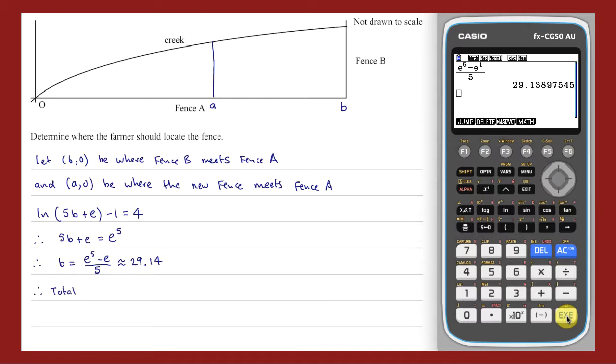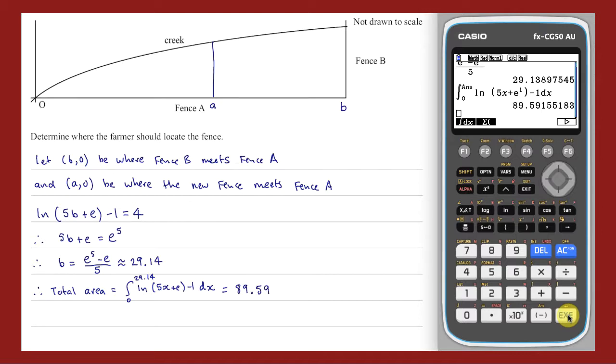Now that I know B, the total area of the paddock can be obtained by calculating the integral from 0 to B of the function D. This can be calculated using the math menu of the run matrix app of my CG50. This means that the integral from 0 to A where the new fence is drawn will be equal to half of this value.